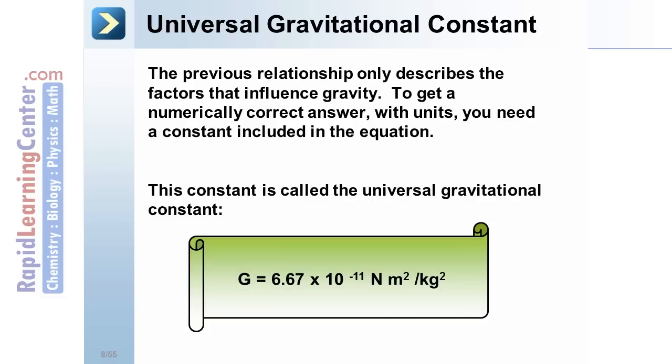Note this constant is labeled as big G or capital G. Don't confuse this with our acceleration due to gravity of negative 9.8 meters per second squared.